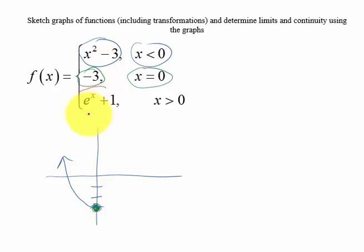And then the last piece is e to the x plus one when x is greater than zero, and e to the x, we know a basic e to the x graph crosses the y-axis at one and looks something like that. And so this one has just shifted up one.